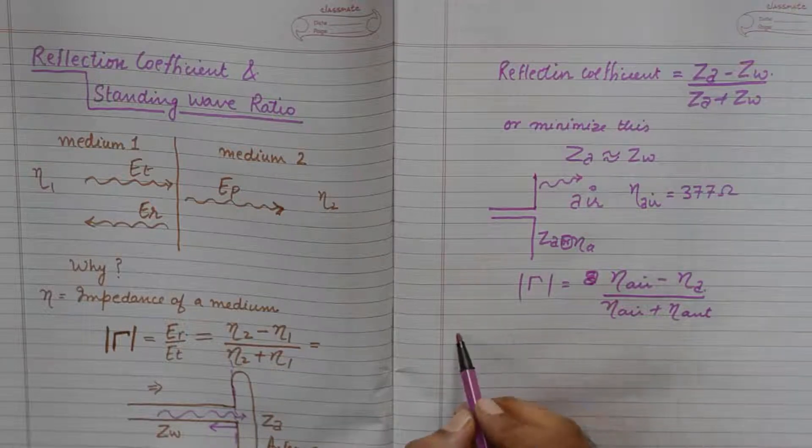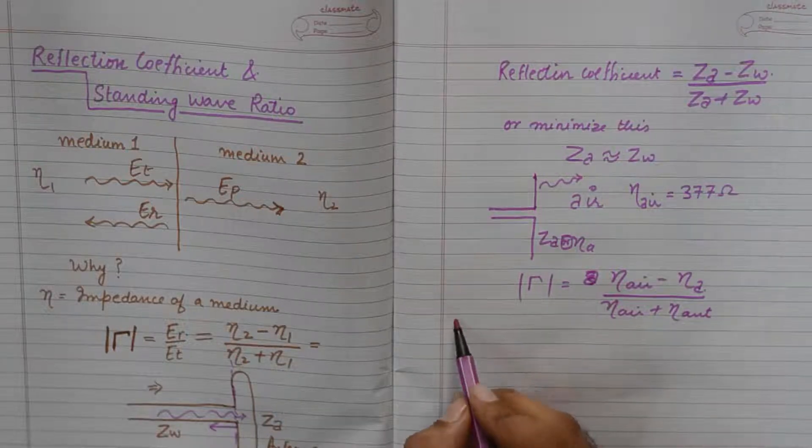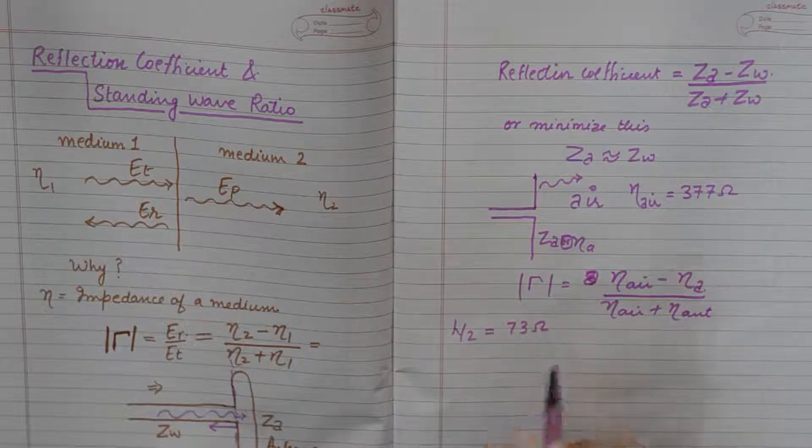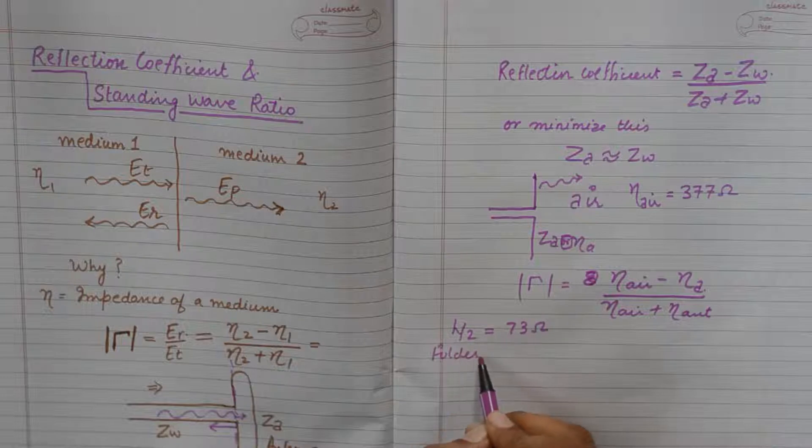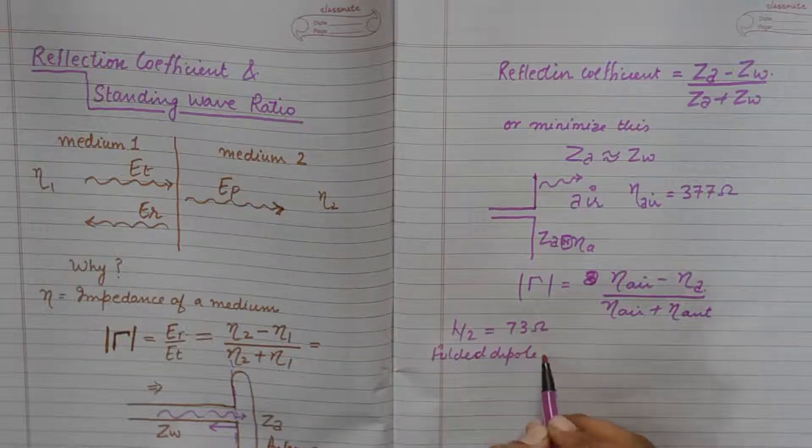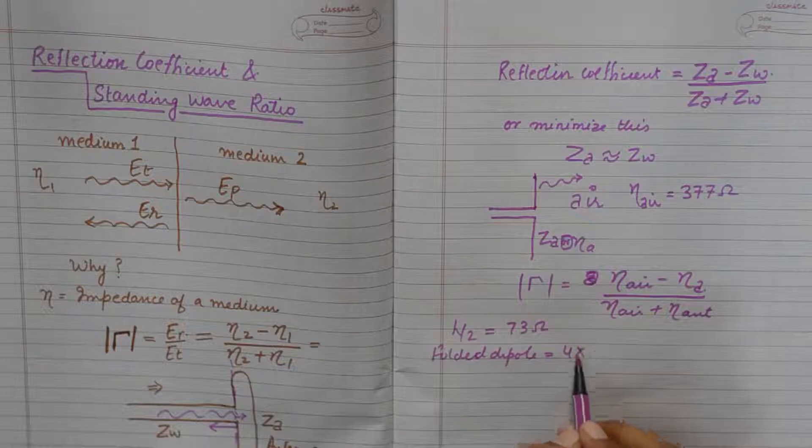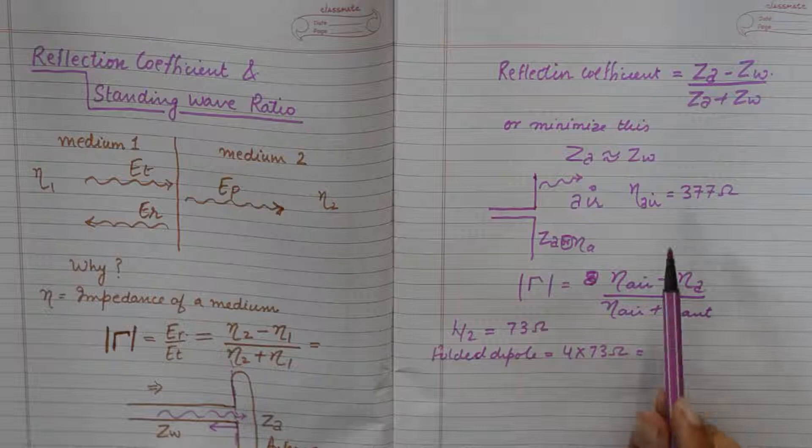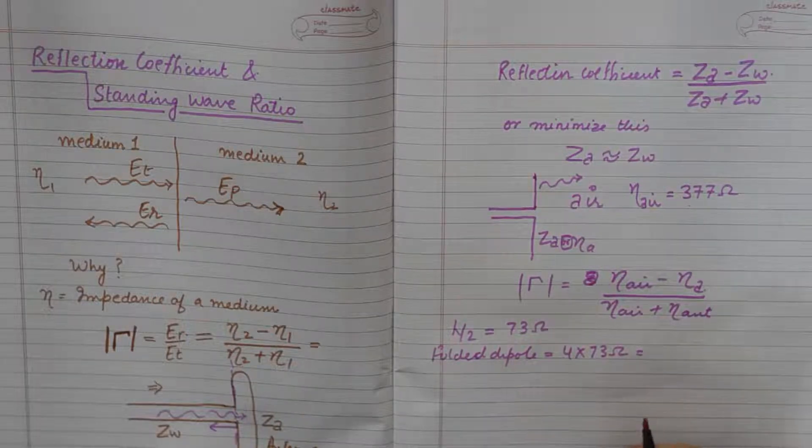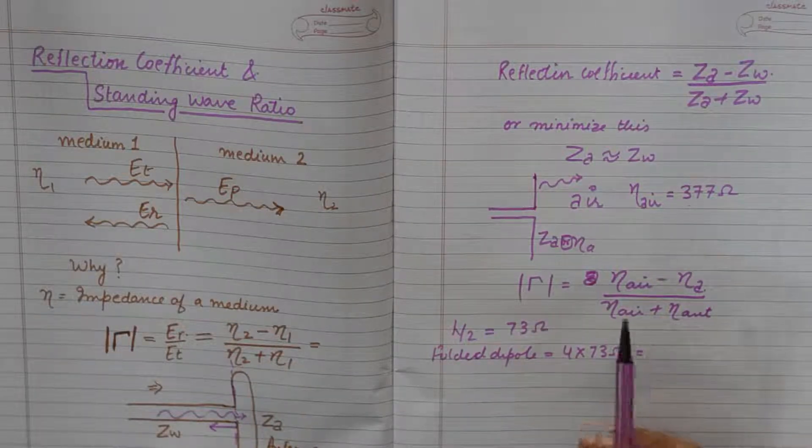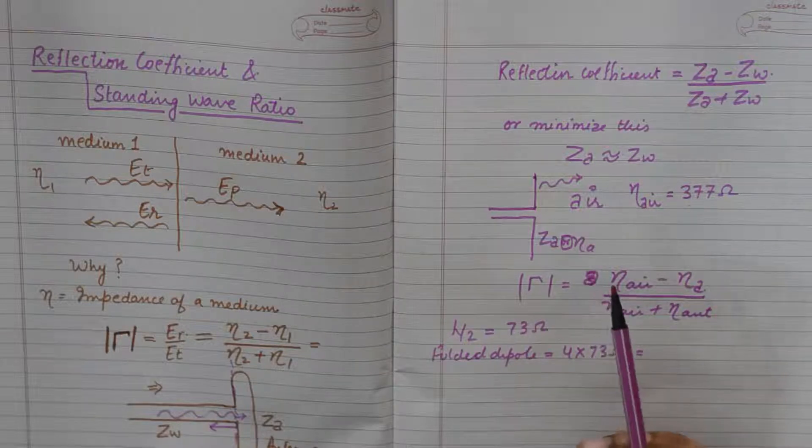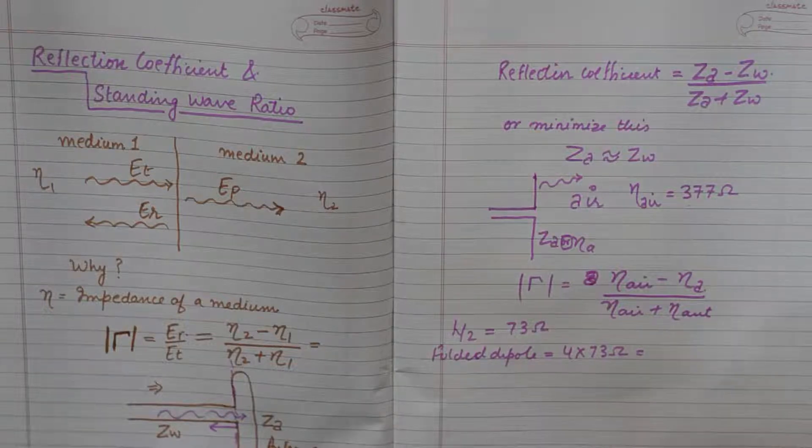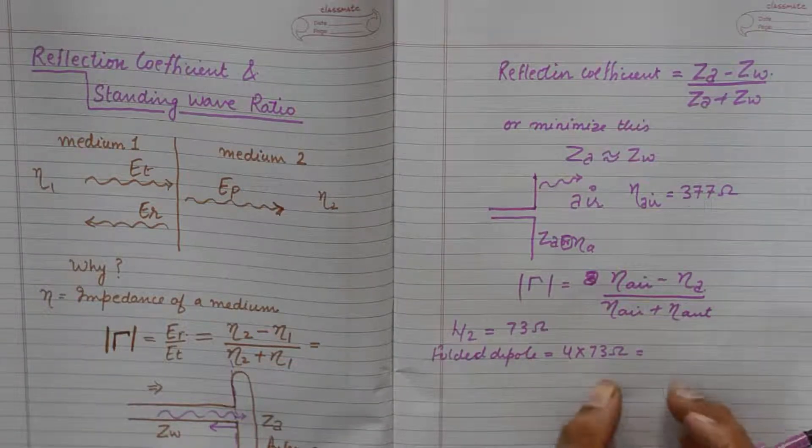A classical example of this is a lambda by 2 antenna has impedance of 73 ohm, but a folded dipole has an intrinsic impedance of 4 times 73 ohms that makes it closer to 377. So that is why folded dipole is recommended for transmitting with a lower reflection coefficient. The lower the reflection coefficient, the better is the transmission.